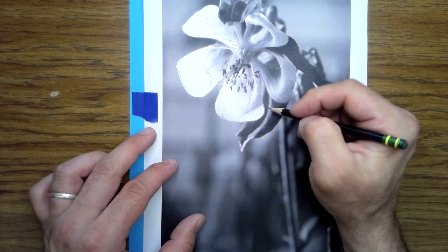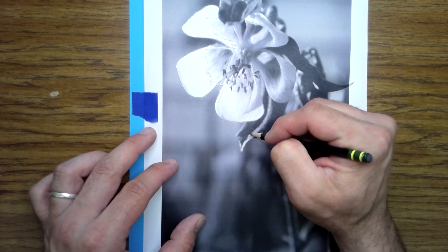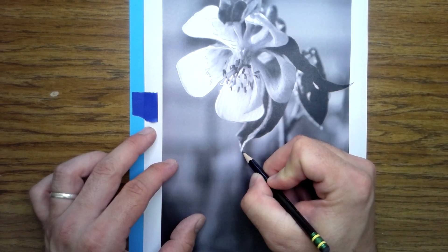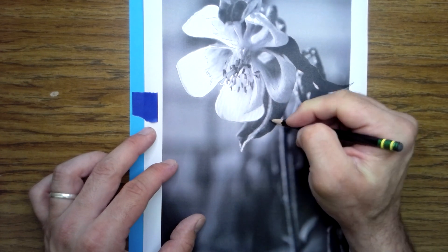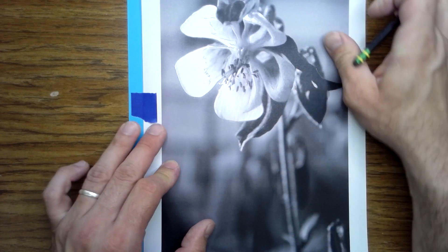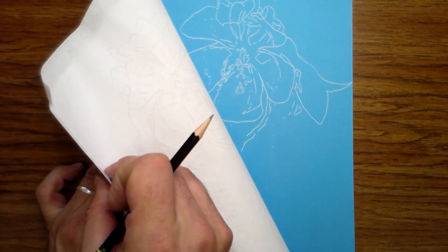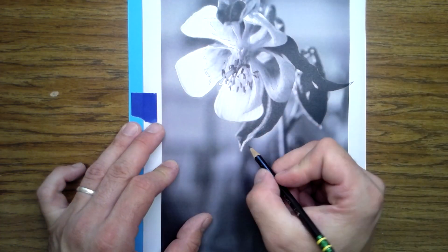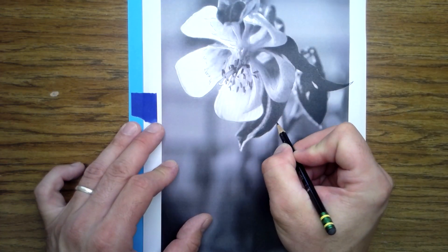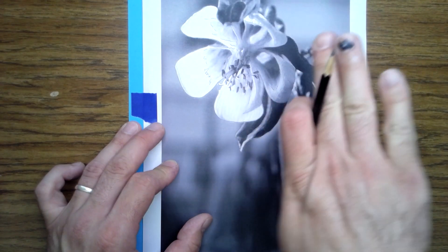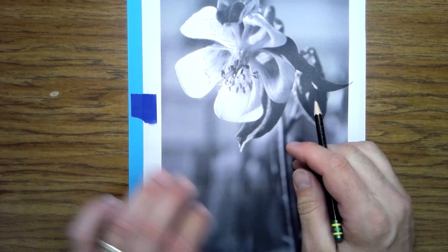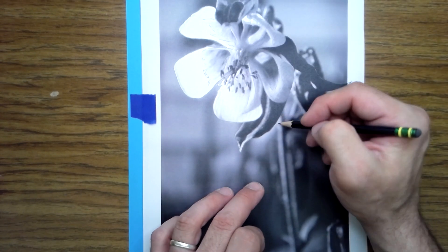So I can't just draw one line there. I have to trace or transfer that edge so that it creates the highlight, and then of course the rest of the dark area right there. Same thing over here - it's creating the curvature of that part of the stem.